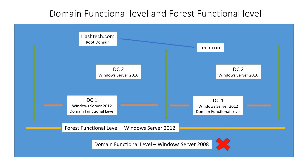If you want to raise hashtag.com's domain functional level to 2016, you either need to upgrade domain controller one from 2012 to 2016, or decommission and reinstall the server as 2016. You need to do this for all domain controllers on the lower version. Once all are at 2016, you can raise the domain functional level to 2016, and then the forest functional level can also be raised to 2016.